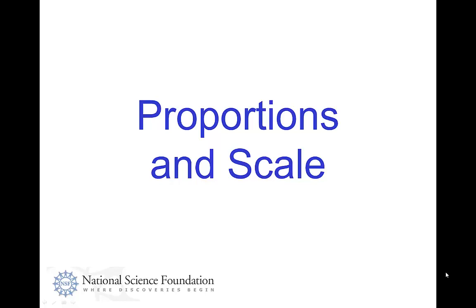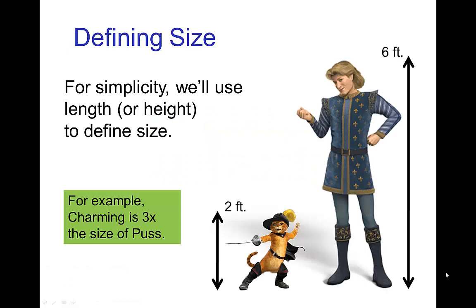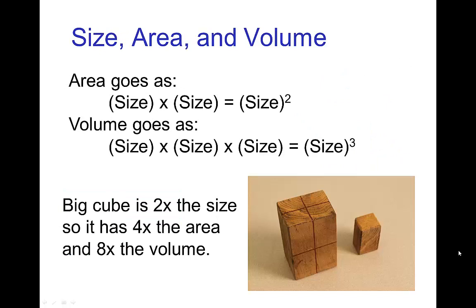In this tutorial on Proportions and Scale, we're going to continue looking at various physical cues that help us distinguish small objects from large objects, or small characters from large characters. Just to remind you, for our definition of size, we take a simple measurement such as the length or the height of a character. So here, Prince Charming is three times the size of Puss.